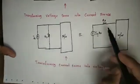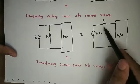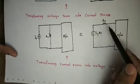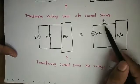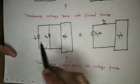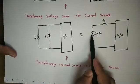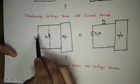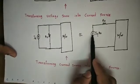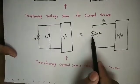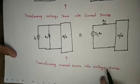If we convert a current source to a voltage source, the current source direction determines the polarity. The head of the current arrow corresponds to the positive terminal, and the other end is the negative terminal. This is how you transform a current source into a voltage source.